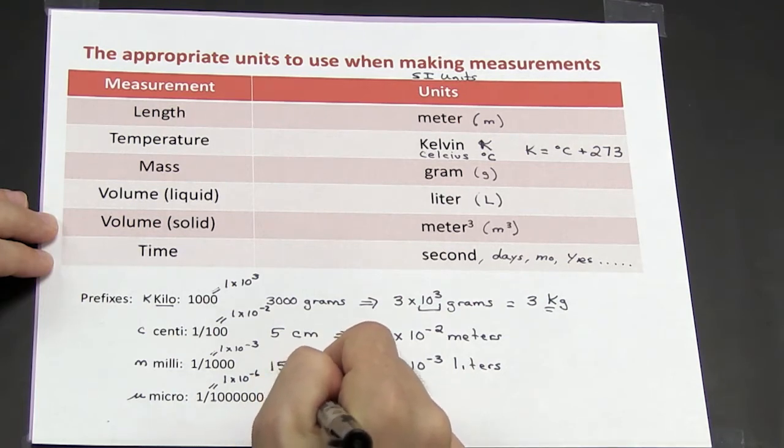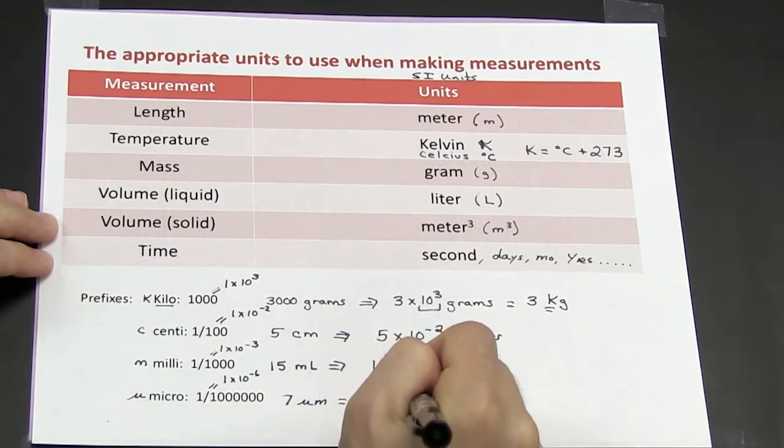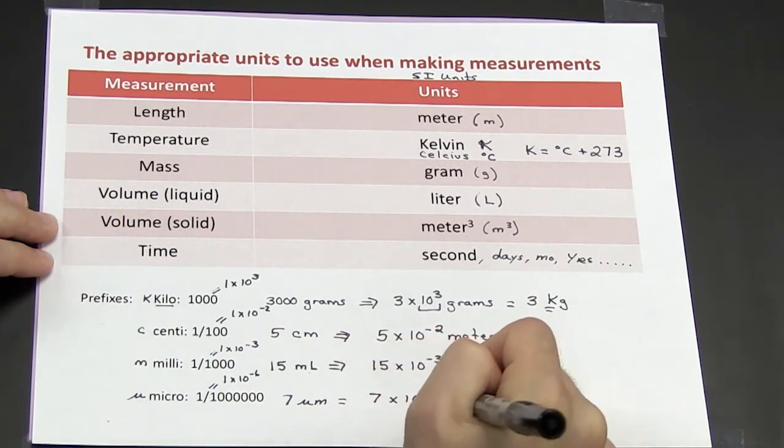So if I have 7 micrometers, that is the same thing as 7 times 10 to the minus 6 meters.